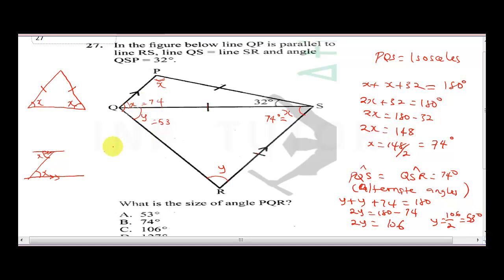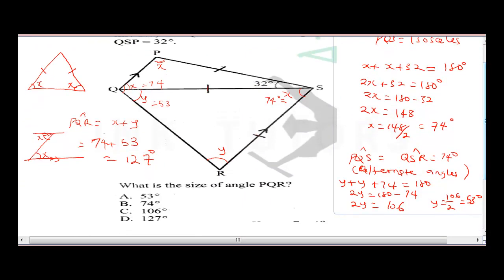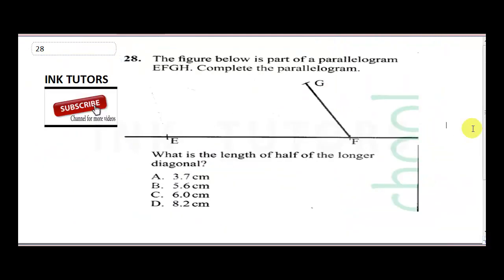Therefore angle PQR equals x plus y, which is 74 plus 53, giving 127 degrees. The correct answer is option D.